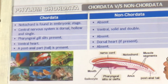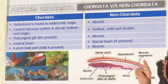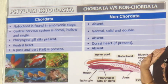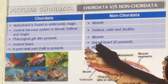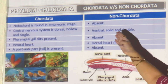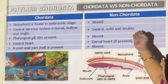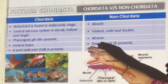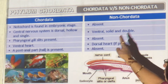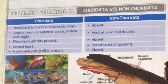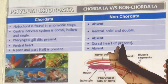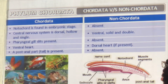Let's distinguish between chordates and non-chordates. In chordates, notochord is at least seen in the embryonic stage; in non-chordates, never seen. The central nervous system in chordates is dorsal, hollow, and single; in non-chordates it is ventral, solid, and double. Pharyngeal gill slits are present in chordates but not in non-chordates. The heart in chordates is ventral; in non-chordates, if present, it is dorsal. Chordates have a post-anal tail; non-chordates have no tail after the anus.